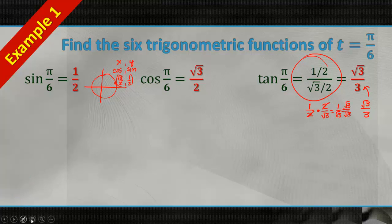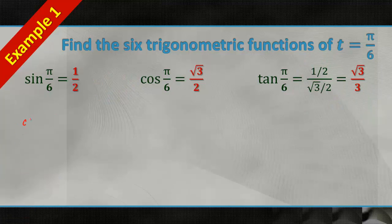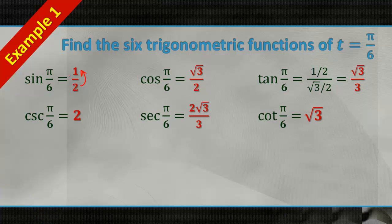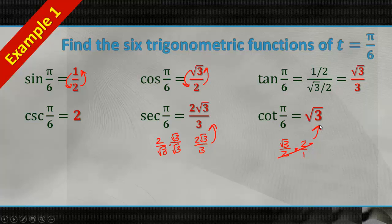Go ahead and try to find the cosecant, secant, and cotangent of pi over 6. Pause it, take a quick second, and see what you get. If you're just coming back, you should have gotten: cosecant is just 2 — you flip 1/2. Secant: flip root 3 over 2 to get 2 over root 3, rationalize to get 2 root 3 over 3. Cotangent: root 3 over 2 times 2/1 simplifies, giving you root 3. Hopefully that makes sense.